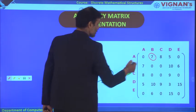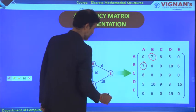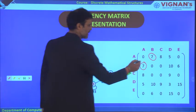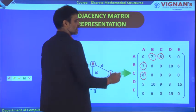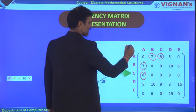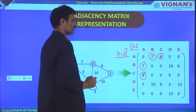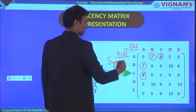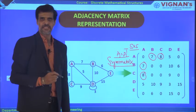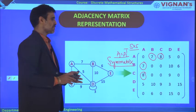The resulting matrix for the undirected weighted graph: row A gives [0, 7, 8, 5, 0]; row B gives [7, 0, 0, 10, 6]; and so on. Observing this matrix, A equals A-transpose — it is a symmetric matrix. For any undirected graph — weighted or non-weighted — the adjacency matrix is always a symmetric matrix. But for a directed graph, this is not the case.